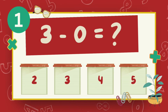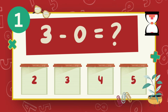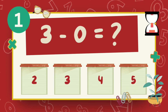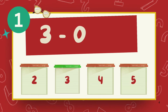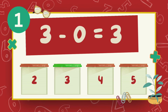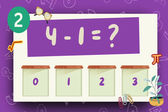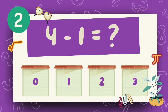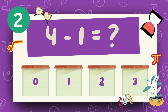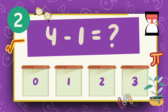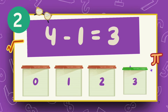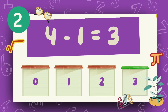What is 3 minus 0? The answer is 3. What is 4 minus 1? The answer is 3.